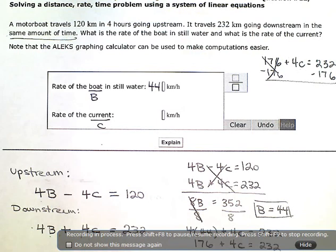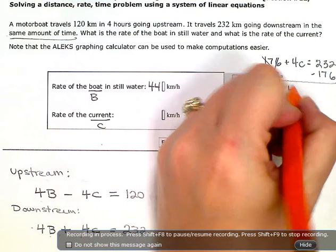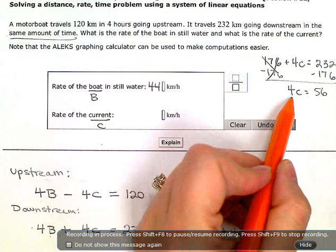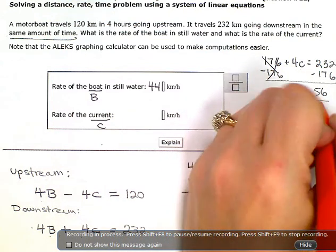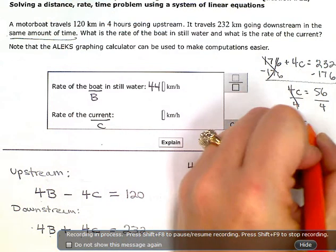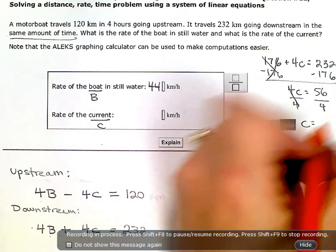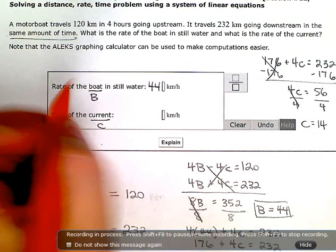So 232 minus 176 gives me 56 over on the right, 4C on the left. Then I divide by 4, divide by 4, and the current is going 14 kilometers per hour.